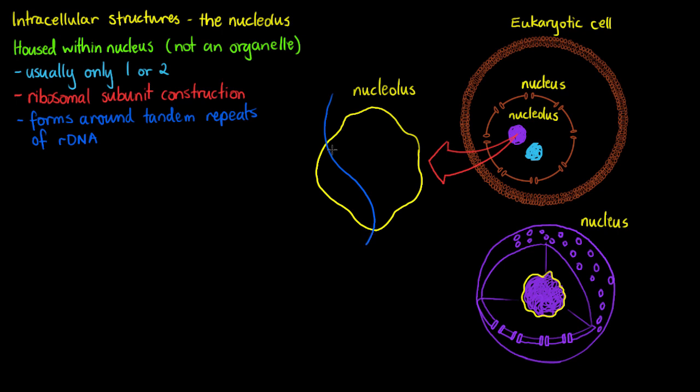So if we have a strand of DNA here and we'll just write DNA at the top, we have this one area of code. That's going to be our ribosomal DNA. But we have the same code repeated again and again and again, and that's why we call it tandem repeats. And these tandem repeats of the ribosomal DNA are going to be responsible for coding ribosomal RNA or rRNA. And we know that we incorporate rRNA into our ribosomal subunits.